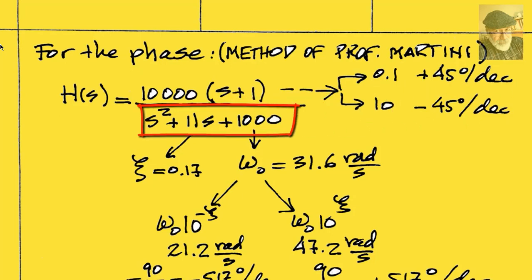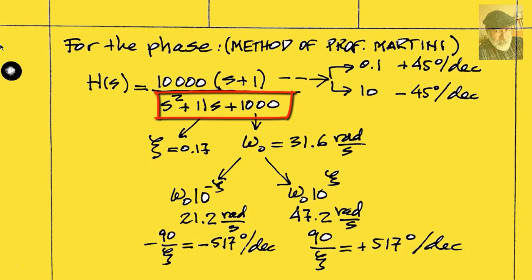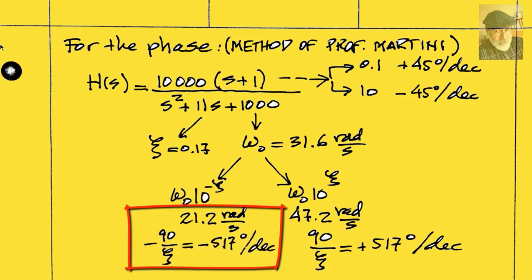The complex pair of poles also adds two corners, one at 10 to the negative zeta times omega knot, that is, zeta decades below omega knot, which is 21.2 radians per second, that adds a slope of negative 90 divided by zeta degrees per decade, below omega knot. Negative 517 degrees per decade, that is, the slope of contribution.